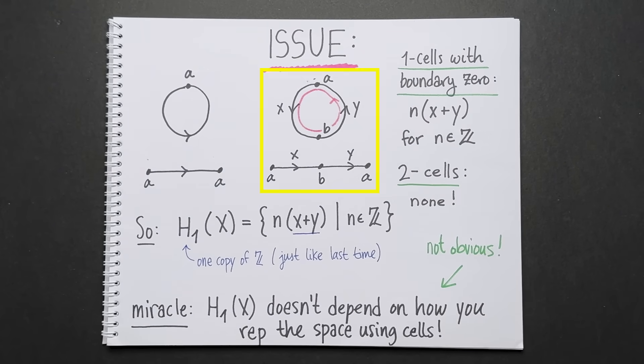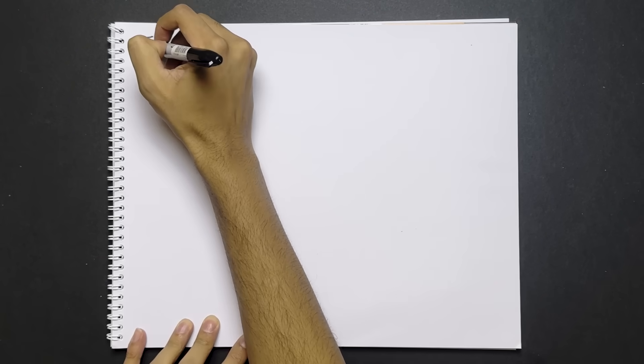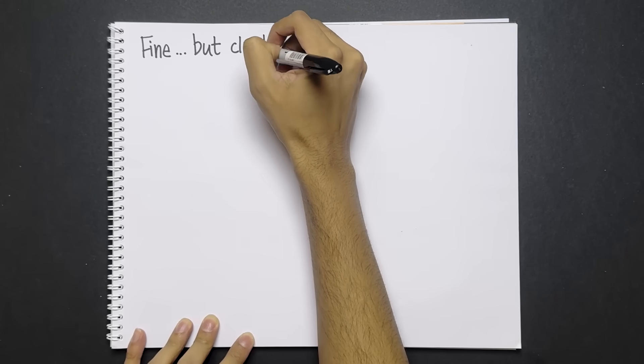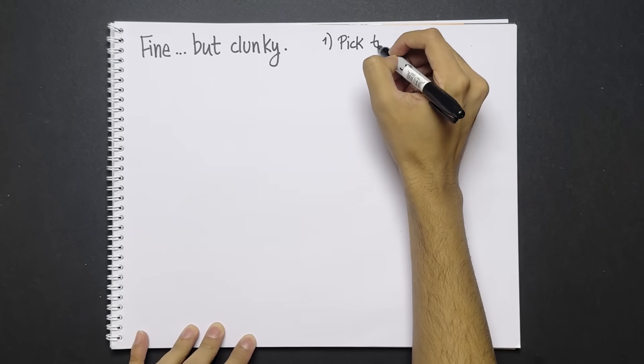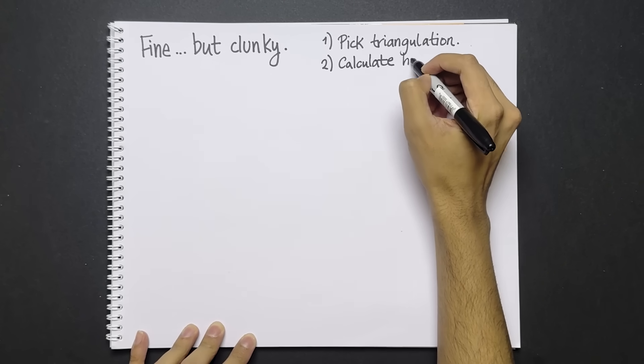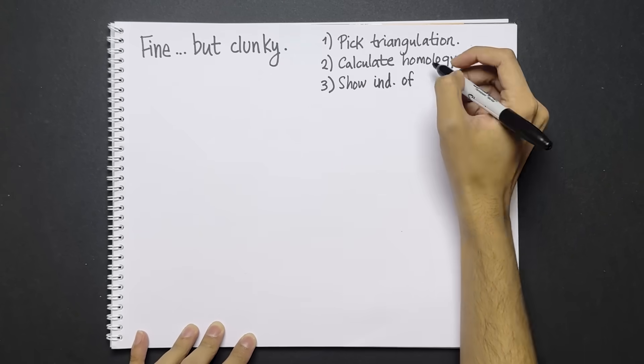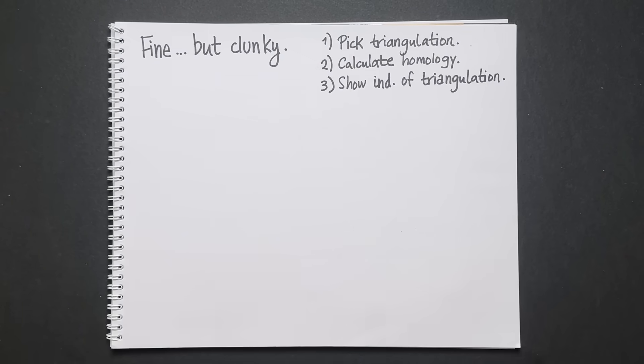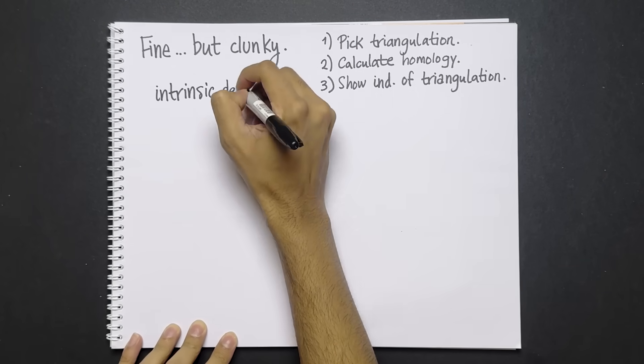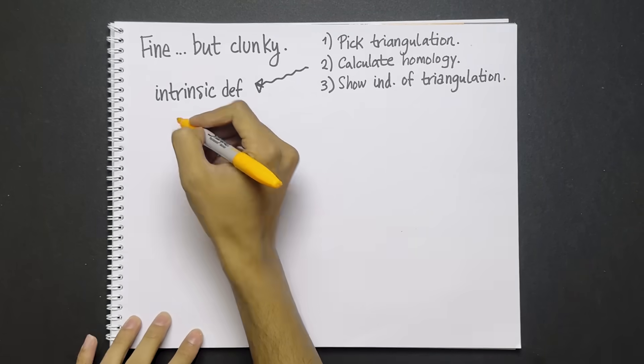These are genuinely different ways to represent the space, and they give you a genuinely different set of calculations. But when you take homology, you get the same answer. This is fine and good, but the definition of homology is quite clunky. You have to pick a triangulation, calculate the homology, and then show that the result is independent of the triangulation you chose. So, ideally, we'd like a more intrinsic definition of homology that doesn't require us to make any choices.